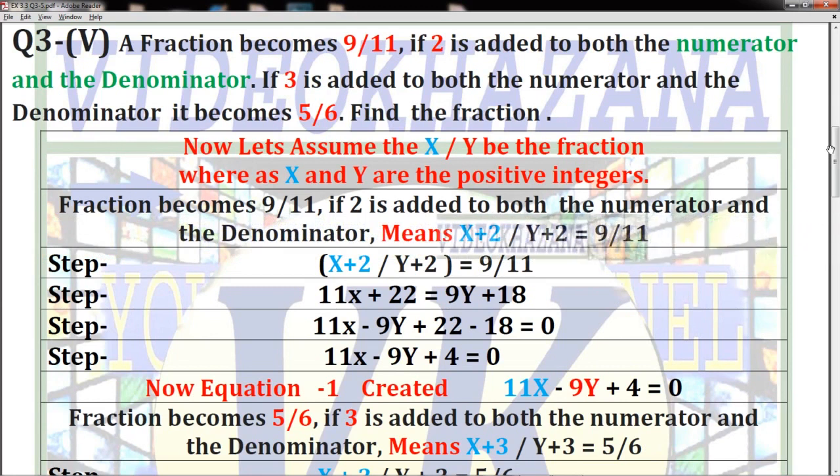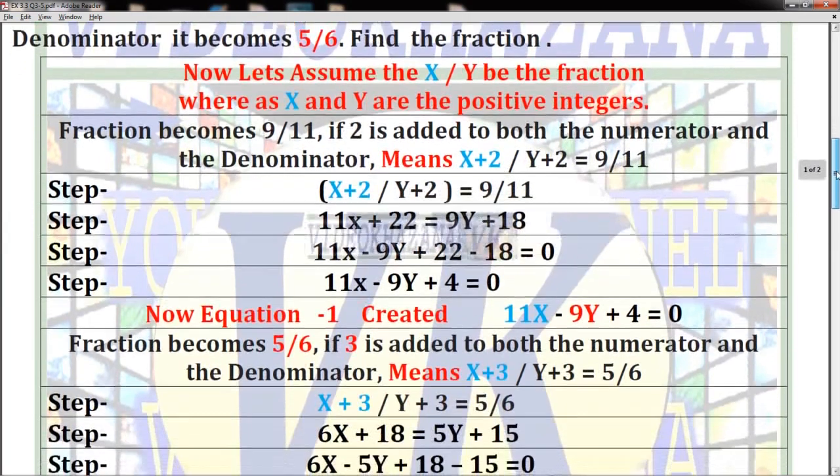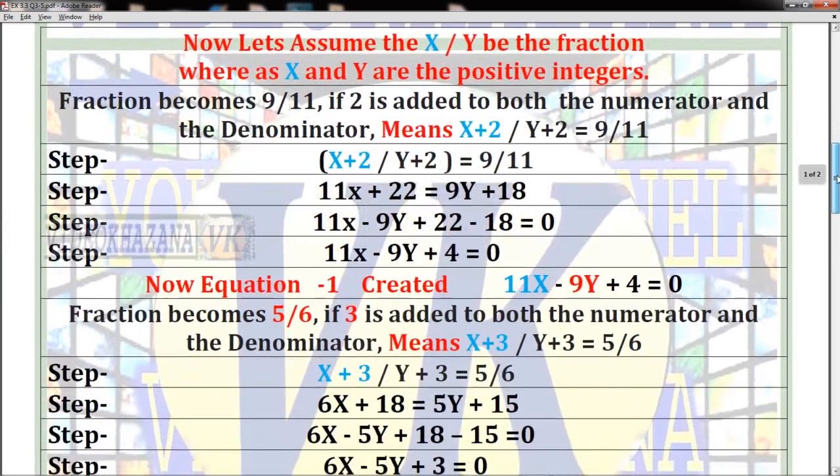Here are the calculation steps. We put the values according to the given criteria in question 3.5. After solving step by step, you will get 11x - 9y + 4 = 0. Our first equation has been created.